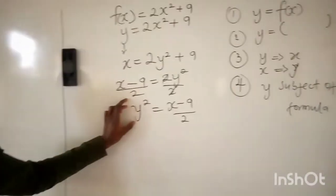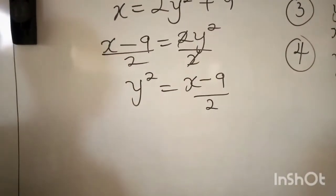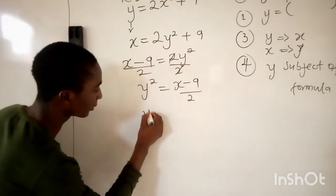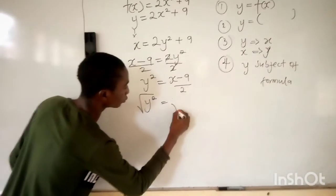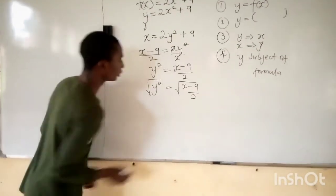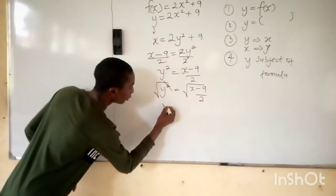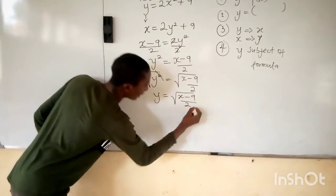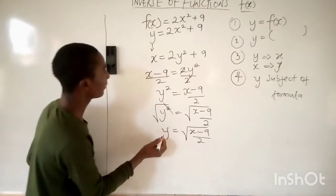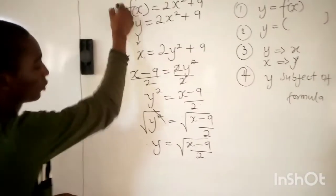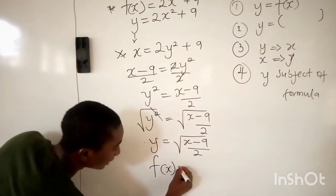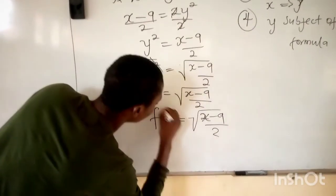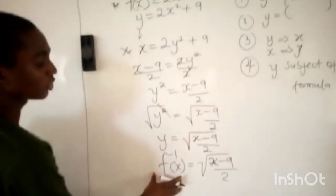We are not looking for y squared — we are looking for y alone. Since it is a square, we need to square-root both sides to cancel the square. Taking the square root of both sides: the square root of y² equals the square root of (x minus 9) over 2. So y is equal to the square root of (x minus 9) all over 2. This is the inverse of this equation.